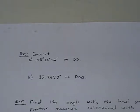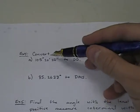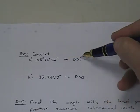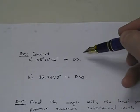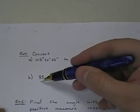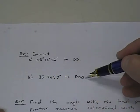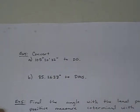More videos with basic angle computations. I've got some conversion problems. I want to convert degrees, minutes, and seconds to decimal degrees, which is DD. We abbreviate decimal degrees as DD. And I will convert a decimal degree to DMS, which is degrees, minutes, seconds. So we're going to do both of these problems.